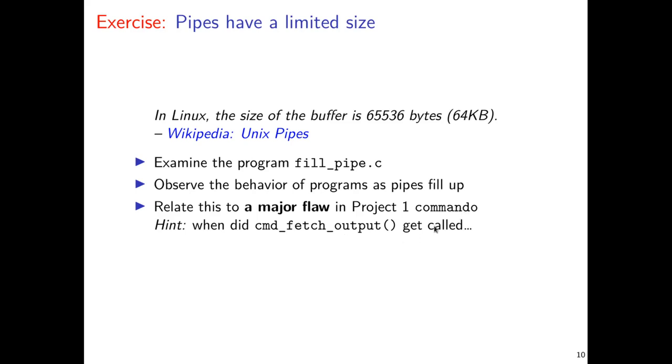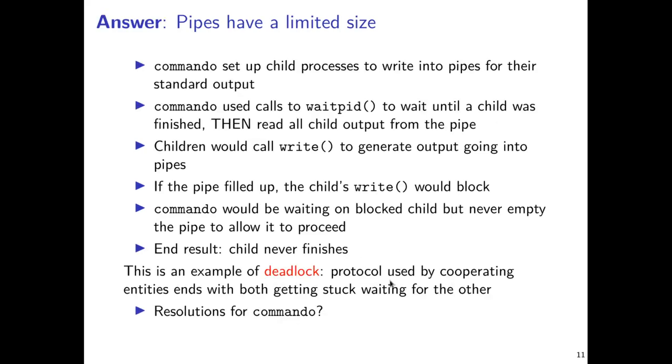The flaw with this is that if the child process generates more output than can fit in a pipe, suppose it generates 70,000 bytes of output, it'll block at 65,536, unable to continue because it can't produce any more output. Unfortunately, that pipe is going to remain full because commando was only ever going to read out of the pipe once the child process is done. At the point that the child process can't complete because the pipe is full, you have this deadlock.